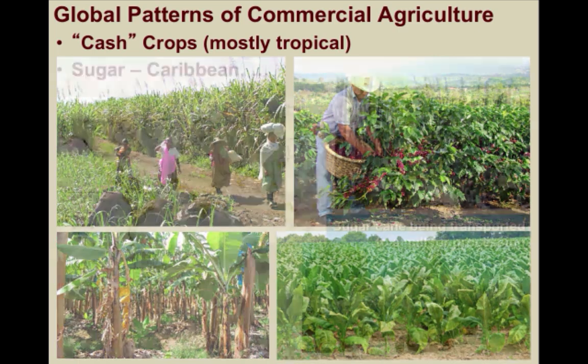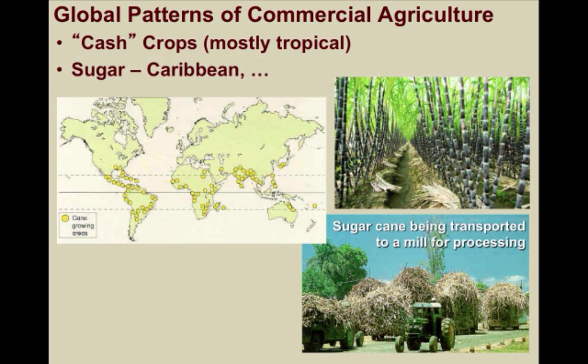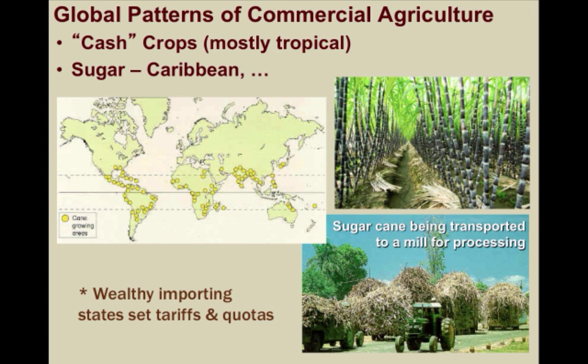A major cash crop is sugarcane, which is grown in large amounts in the Caribbean. The developed countries create a high demand for sugar but generally cannot grow it in their own countries. The people in wealthy importing countries indirectly set the prices due to fluctuating demand, and sometimes directly through tariffs and import quotas. In this way, the producers are really at the mercy of the consumers. If producers were to raise prices, consumers could always find alternatives, especially in our globalized, containerized world.